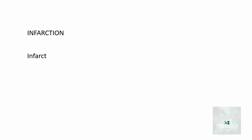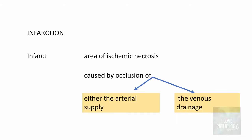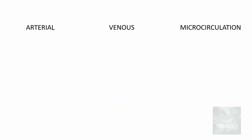Before we understand what infarction is, let us see what we mean by infarct. An infarct is an area of ischemic necrosis caused by occlusion of either the arterial supply or the venous drainage. The whole process — tissue death or necrosis due to inadequate blood supply to the affected area — is known as infarction. Infarction is also caused by occlusion at the level of microcirculation.